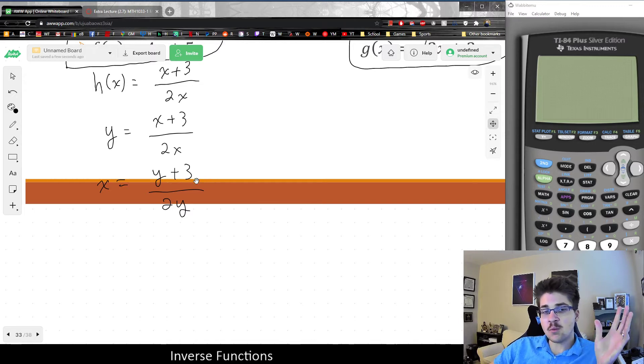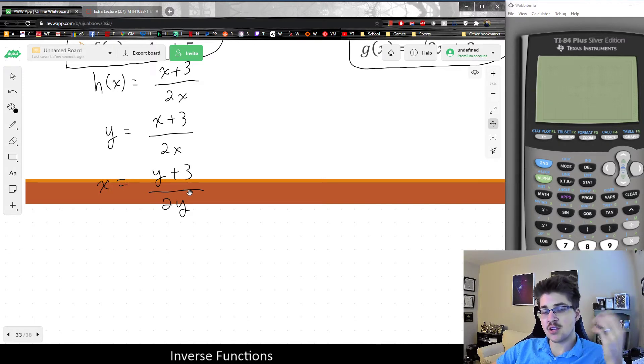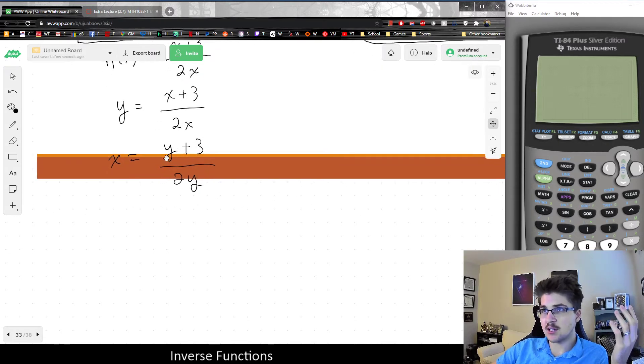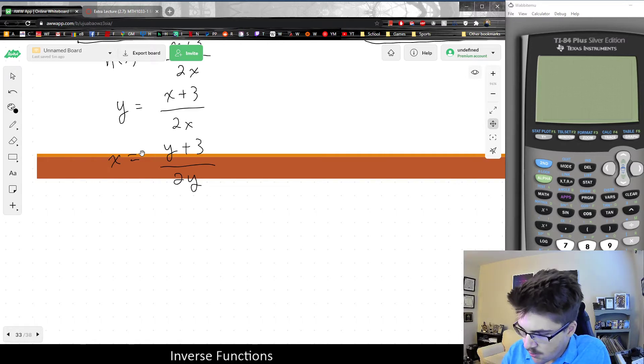But anyways, when you have more than one y, what do we do? We want to try to put all the y's on one side and all the x's on the other side, which is sort of the case, but we're sort of stuck with this fraction. But another general tip for solving an equation that involves fractions, one thing that can be helpful is to clear the fractions from both sides. So what I would do next is actually multiply 2y to both sides or cross multiply, which would leave me with 2xy = y + 3.